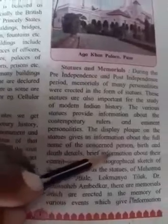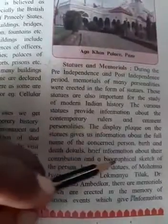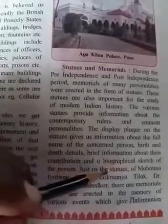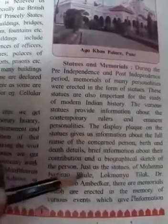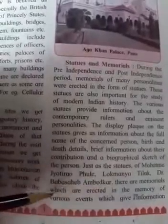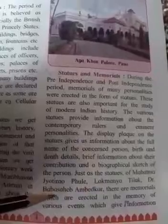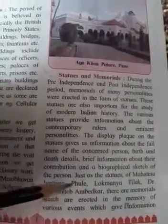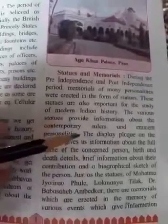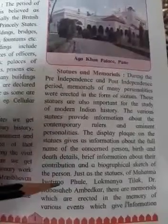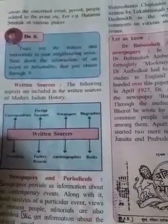The display flag on the statues gives us information about the full name of the concerned person, birth and death details, brief information about their contribution, and a biographical sketch of the person. Examples include statues of Mahatma Jyotirao Phule, Lokmanya Tilak, Dr. Babasaheb Ambedkar, Savitribai Phule, Netaji Subhash Chandra Bose, and others. These statues give us information about the contemporary period, contemporary rulers, and various events.